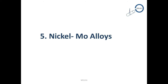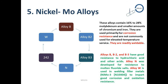Nickel-molybdenum alloys: the principal alloys in this group are Alloy B, B2, B3, N242 and W. These alloys contain 16% to 28% molybdenum and smaller amounts of chromium and iron. They are used primarily for corrosion resistance and are not commonly used for elevated temperature service, but they are readily weldable. Alloys B, B2 and B3 have good resistance to hydrochloric acid and other acids. Alloy N was developed for resistance to molten fluoride salts. Alloy W is used in welding filler metal NiMo-3 to impart good corrosion and oxidation resistance.